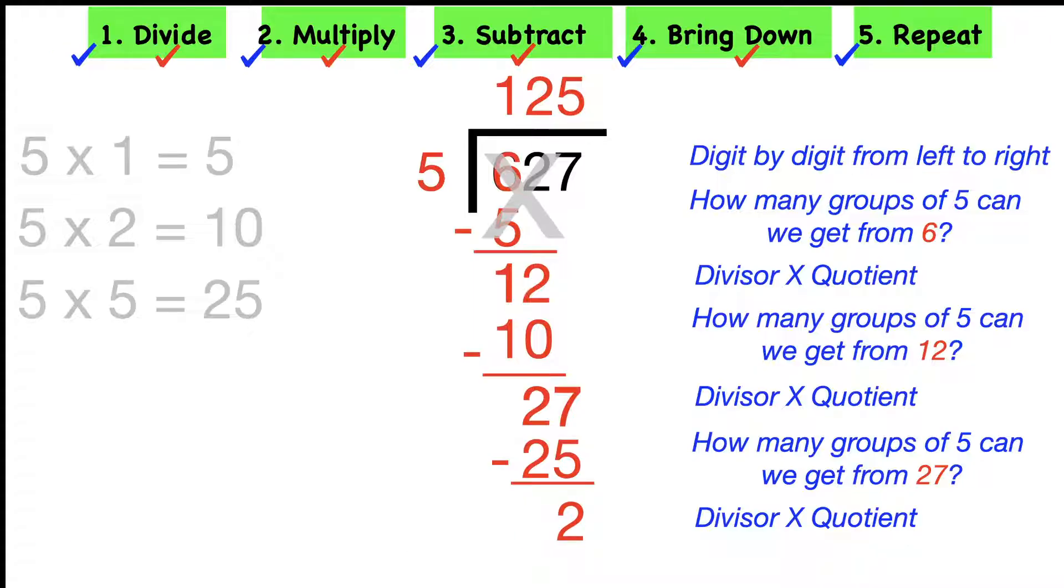We don't have anything else to bring down for this problem. So that two becomes our remainder. And when you write your final answer, don't forget to put your R. So this would be 125 with the remainder of two.